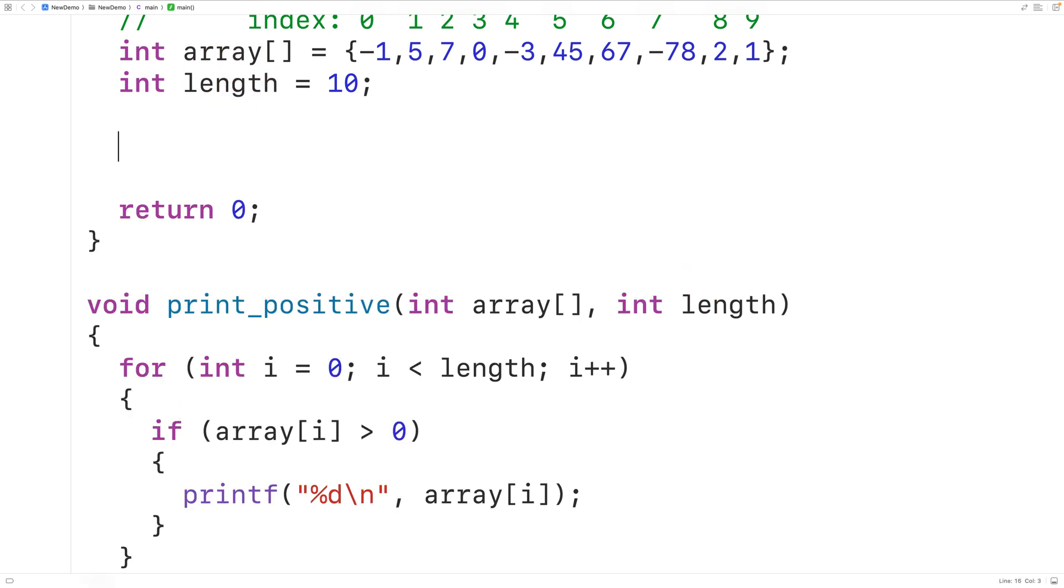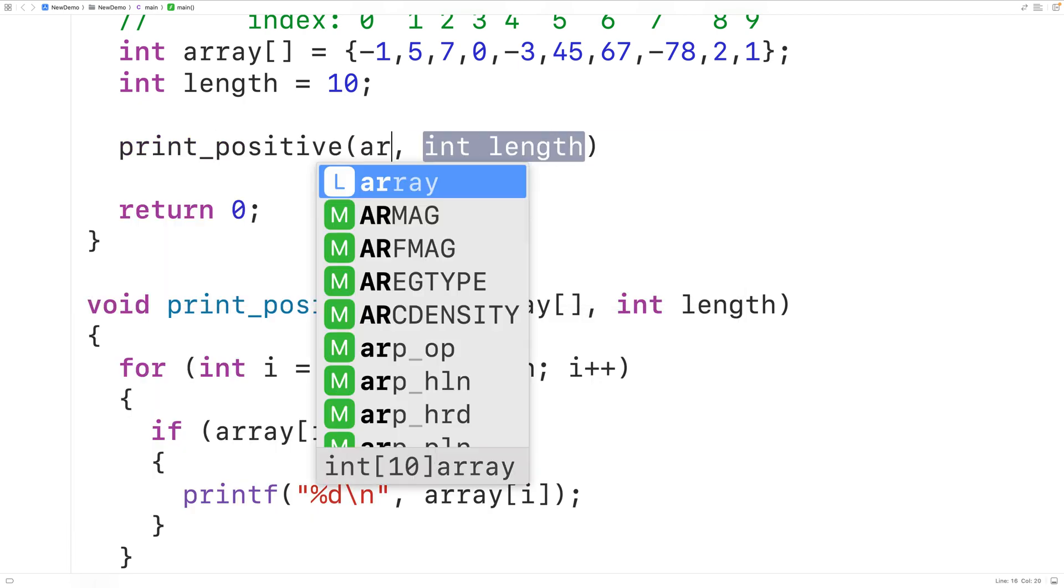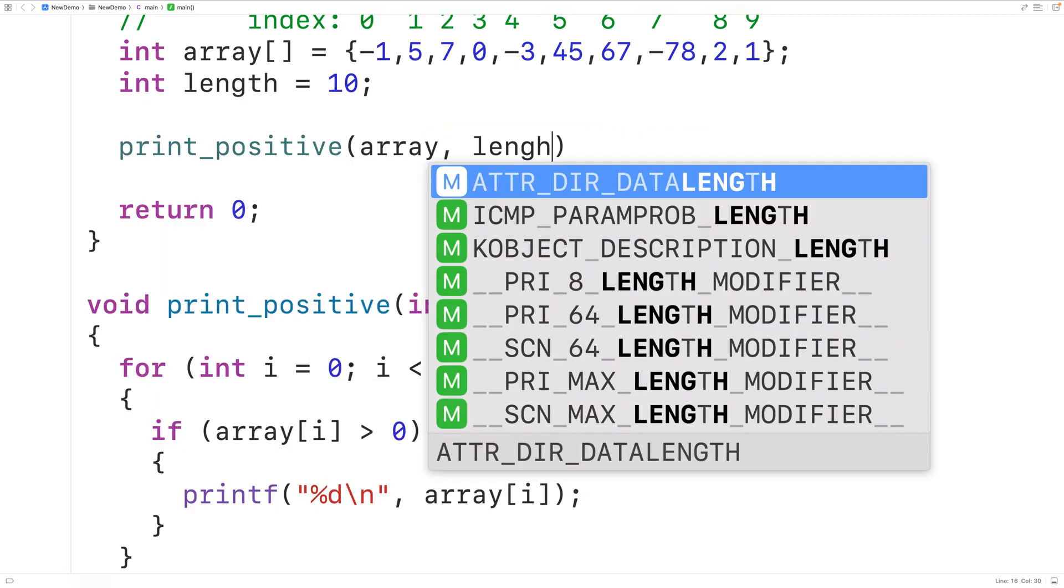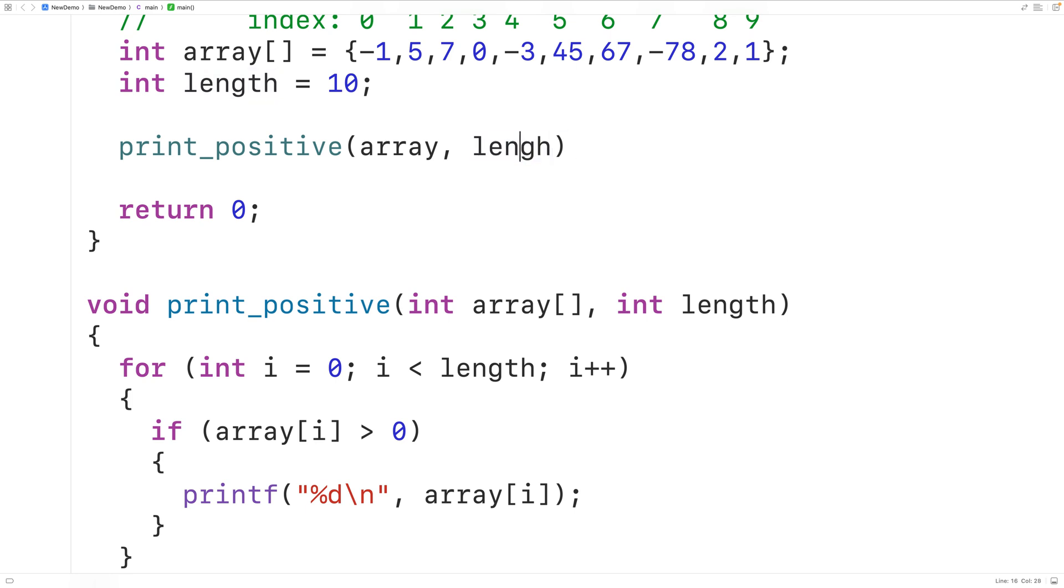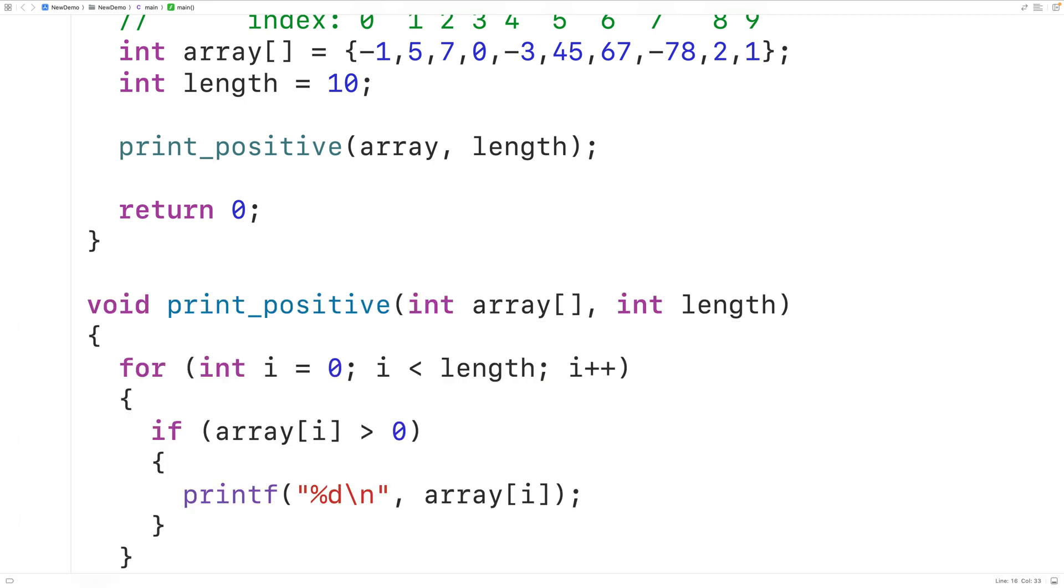Then here we could call the function. We could have print positive and we'll pass it our array and the length of the array and then if we save compile and run the program we'll again get the positive numbers from the array as output. So this is how we can print the positive numbers in an array using C.